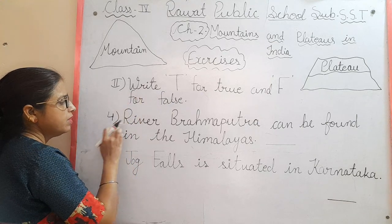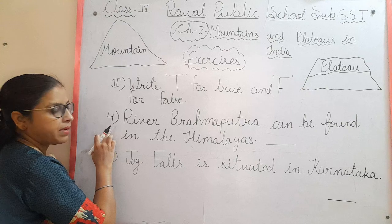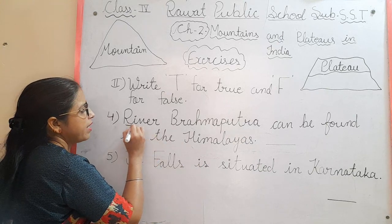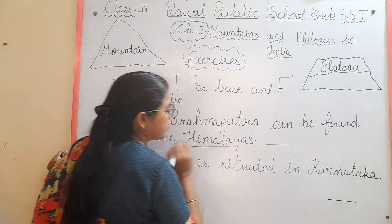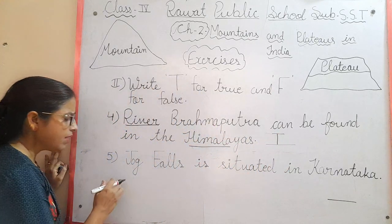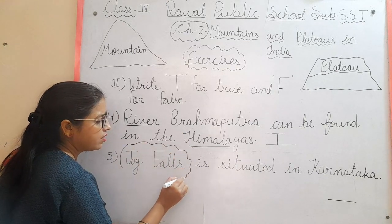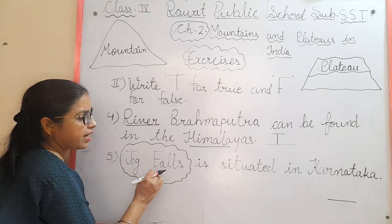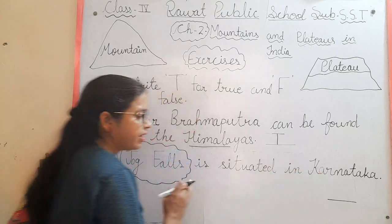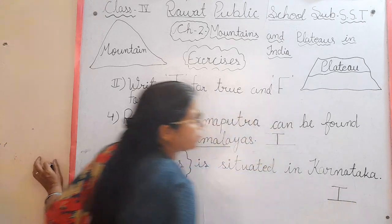Fourth statement: 'The river Brahmaputra can be found in the Himalayas.' Yes, the Brahmaputra is a Himalayan river found in the Himalayas — it is true. Fifth statement: 'Jog Falls is situated in Karnataka.' Jog Falls is a famous waterfall in India, and it is situated in Karnataka — so this is also true.